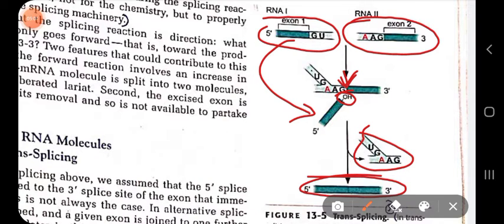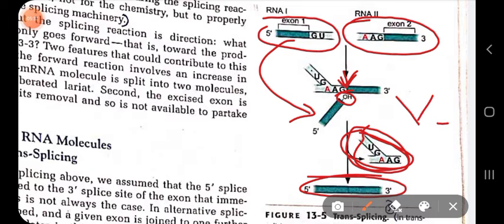A key distinguishing physical feature is that the lariat ring-like structure in the introns is not formed in trans-splicing. Instead, a Y-shaped branch structure appears in the intron, rather than the circular lariat seen in standard splicing.